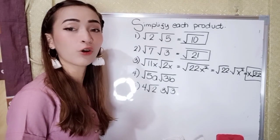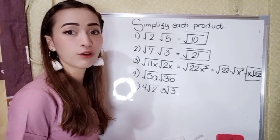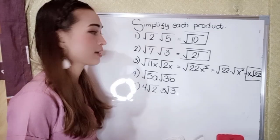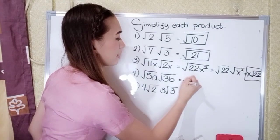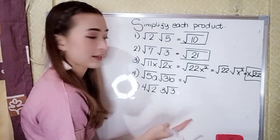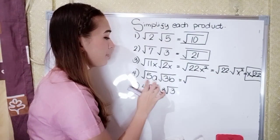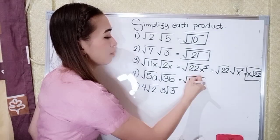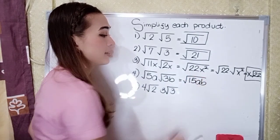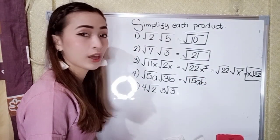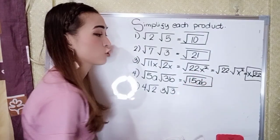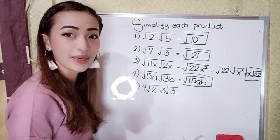For number four, we have square root of five a times square root of three b. Place the radical symbol and multiply the radicands: five a times three b is fifteen a b. Since there are no perfect squares here, the final answer in number four is square root of fifteen a b.